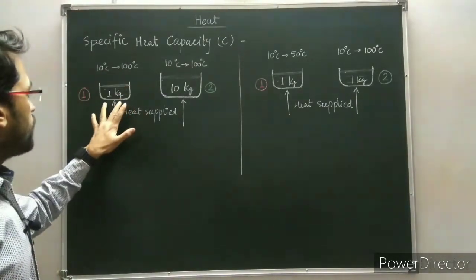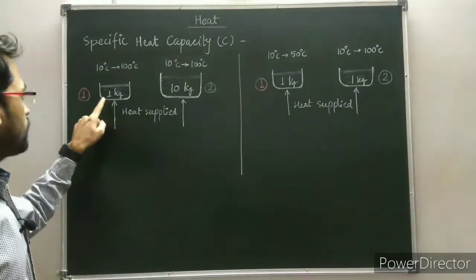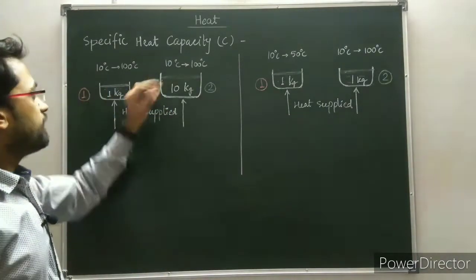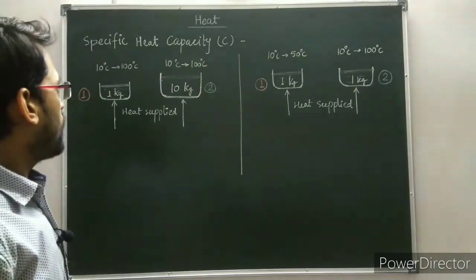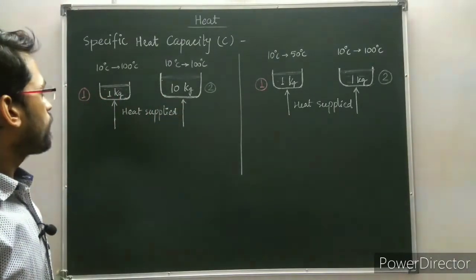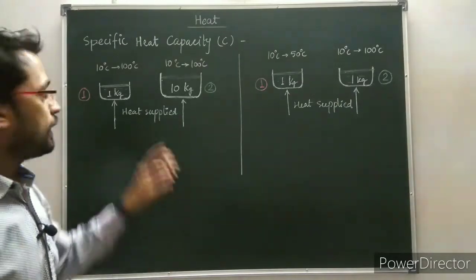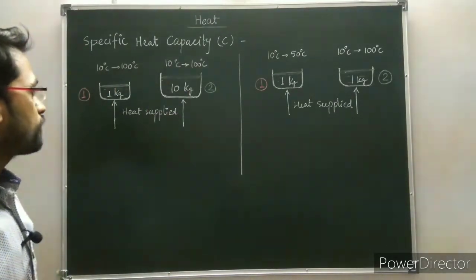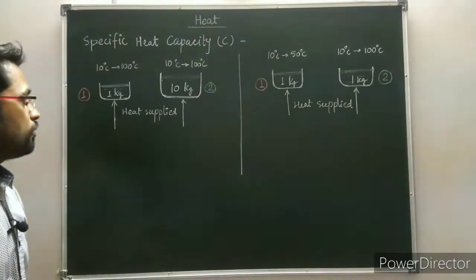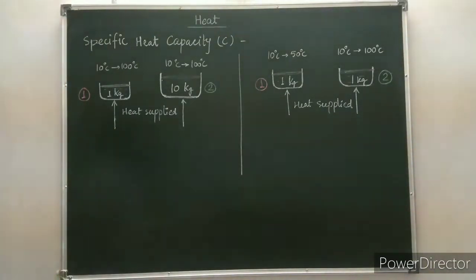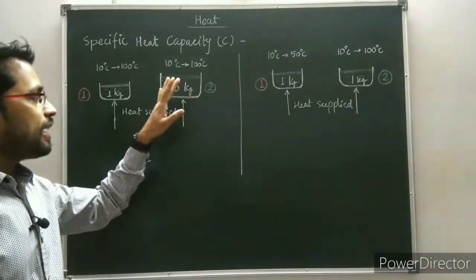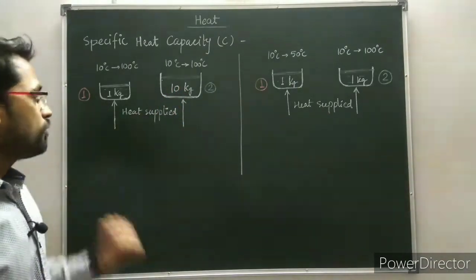Here we have two containers, 1 and 2, having 1 kg and 10 kg of water respectively, both at 10 degrees Celsius. We have to raise the temperature of both waters equally, from 10 degrees Celsius to 100 degrees Celsius. Which container will require more heat? The second one, because the second container has greater mass than the first one.